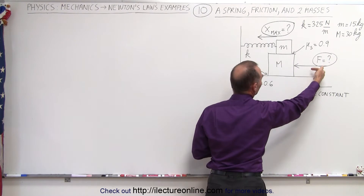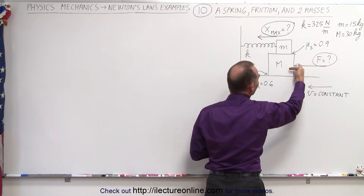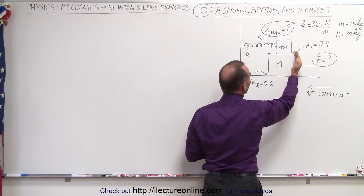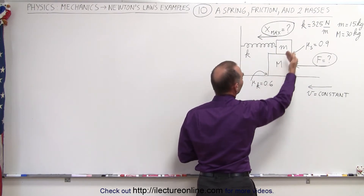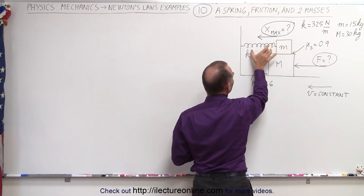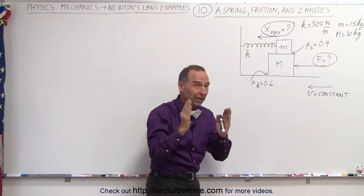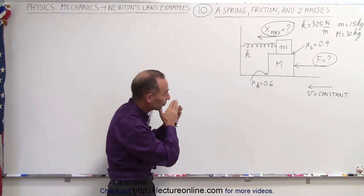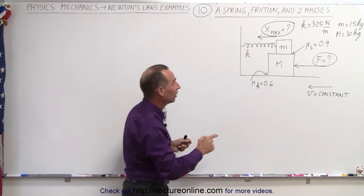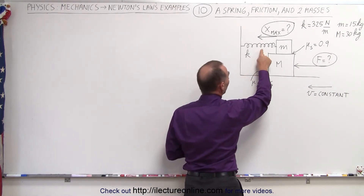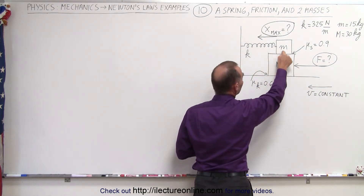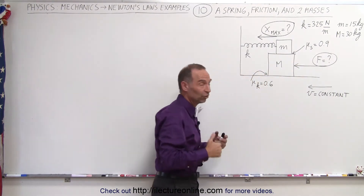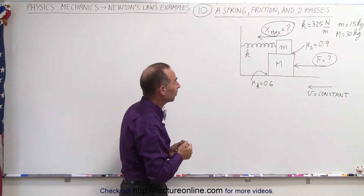A force pushes the big block to the left, and because of the friction force between the two masses, the small mass will be pushed to the left as well and will begin to compress the spring. But as the spring is being compressed, there will be more and more force from the spring pushing back, and eventually the spring force will overwhelm the friction force between the two blocks, and the small one will begin to slide over the big block.